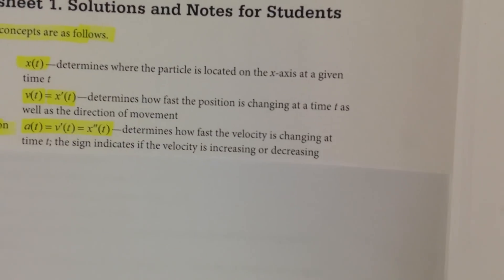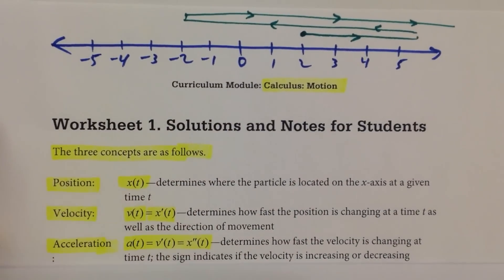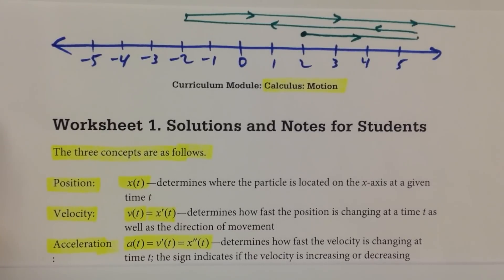Main thing is we're going to be talking about three key concepts. Keep these in mind, and the three key concepts are position. Now, position is determined by where the particle is at a certain time, so that's why we call it x of t.